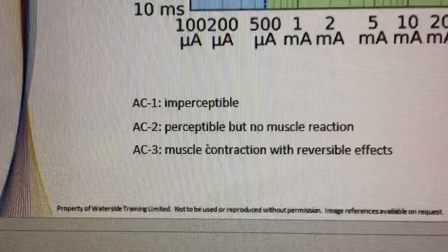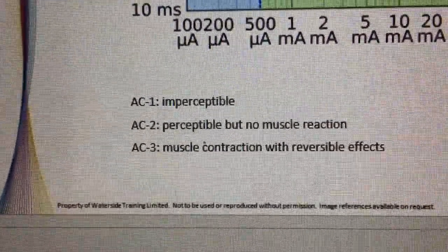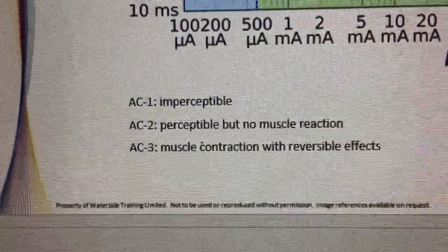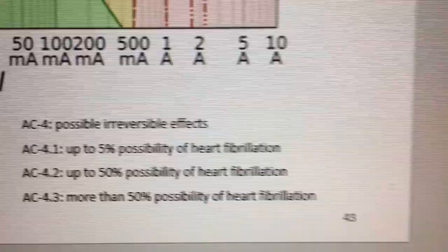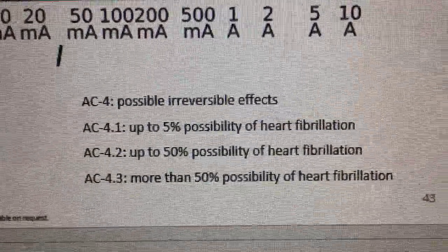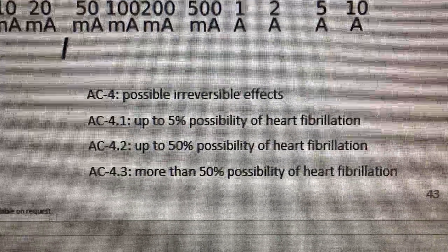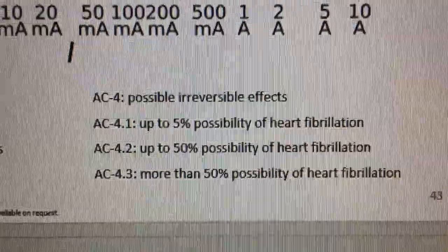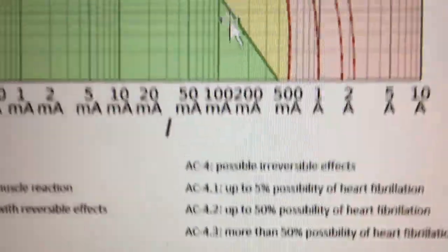If we look at the key underneath: AC1 imperceptible, AC2 perceptible with no muscle reaction, AC3 muscle contraction with reversible effects. Once we move beyond that, however, AC4 shows possible irreversible effects, and AC4.1, 4.2, and 4.3 show various degrees of risk of heart fibrillation, which is effectively a heart attack.